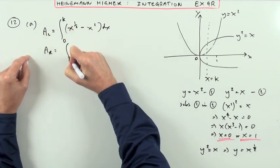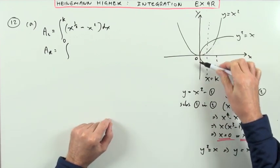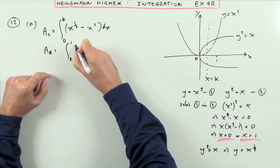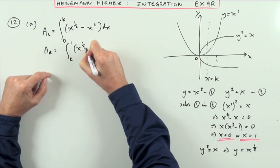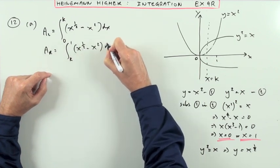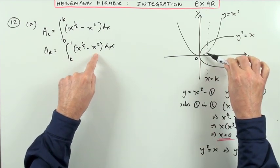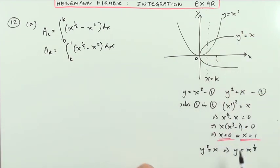The area on the right is going to be exactly the same because the upper is still the upper, only this time I'm going from k onto 1 of x to the half minus x squared dx. Y squared on the top, you take away the y squared on the bottom. So both have to be written in the form of y equals. Right, that was part A.